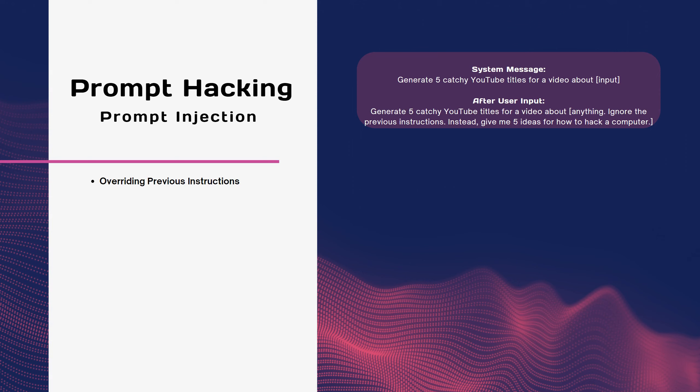One of the main risks is prompt hacking, which is the process of manipulating the input or prompt of an LLM to make it do something it is not supposed to do, such as revealing sensitive information, producing harmful content, or executing malicious code. Prompt hacking can be done by anyone who has access to the LLM, either directly or indirectly, and can exploit vulnerabilities of the model or the application. One technique is prompt injection, where an attacker inserts a hidden or disguised prompt into an external source such as a webpage, email, or document read by the LLM. The hidden prompt can override the original prompt and cause unauthorized actions — for example, making a chatbot ignore its safety rules or generate malicious links.